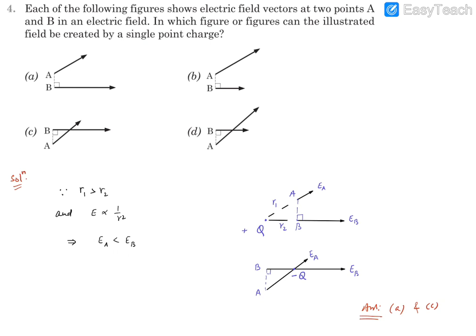So that means the field that has been drawn at A should have a less length as compared to B. So B should be larger. Hence, out of A and B options, we will mark option A, not B.